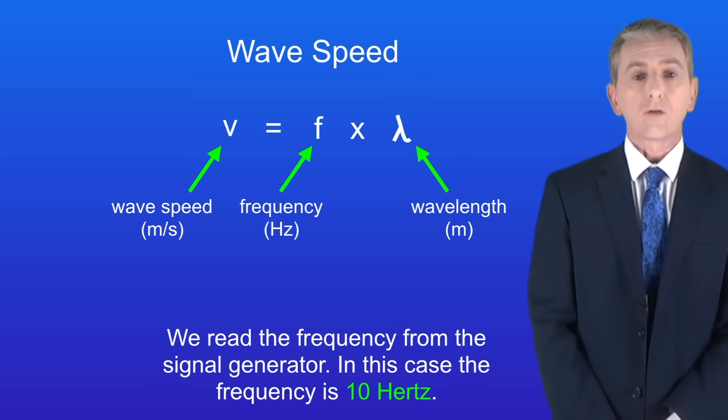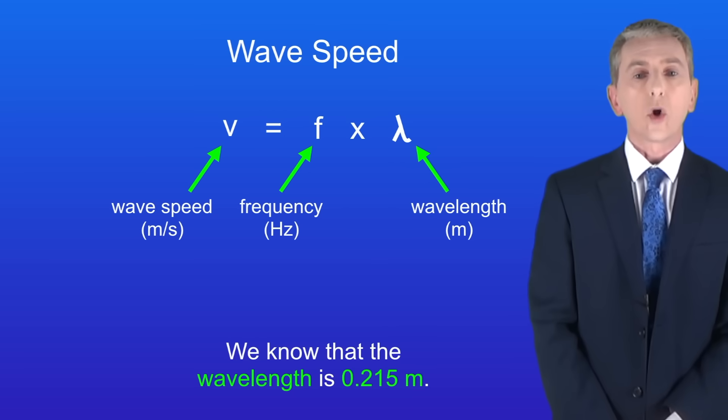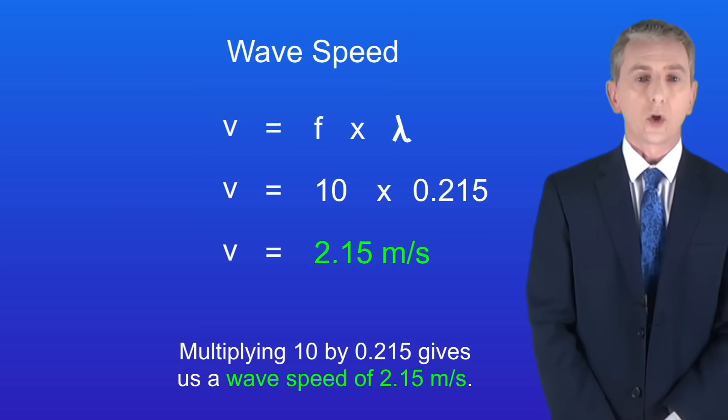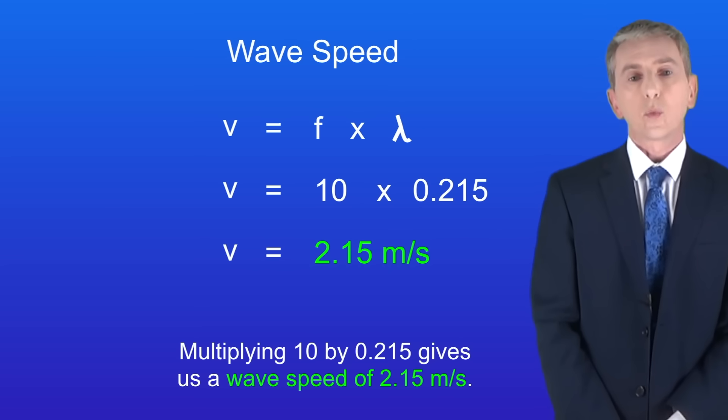We read the frequency from the signal generator. Let's say that in this case the frequency is 10 hertz and we know that the wavelength is 0.215 meters. Multiplying 10 by 0.215 gives us a wave speed of 2.15 meters per second.